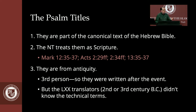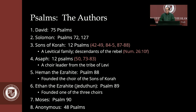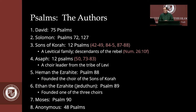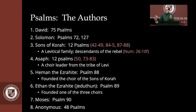There are a number of authors of the Psalms. David wrote 75 of the 150. Solomon wrote 2, Psalms 72 and 127. Twelve of the Psalms were written by the sons of Korah, a Levitical family — descendants of the rebel that the earth opened up and destroyed in Numbers 26. Asaph wrote 12; he was a choir leader from the tribe of Levi. Heman the Ezraite wrote Psalm 88 and founded the choir of the sons of Korah. Ethan the Ezraite wrote Psalm 89 and founded one of the three choirs. Moses wrote the oldest psalm, Psalm 90. And 48 of the psalms are anonymous.